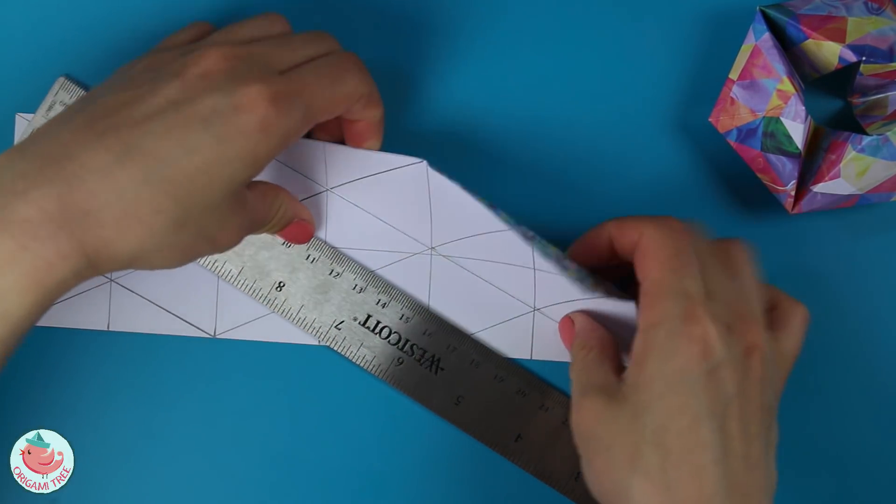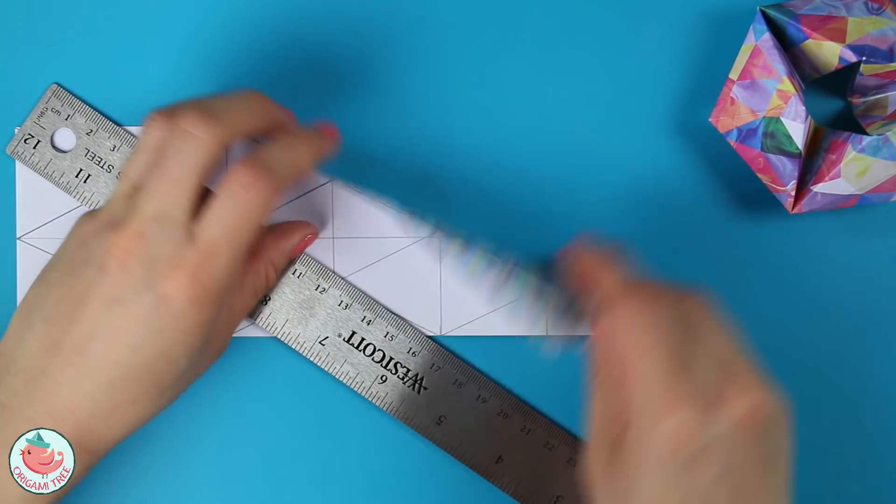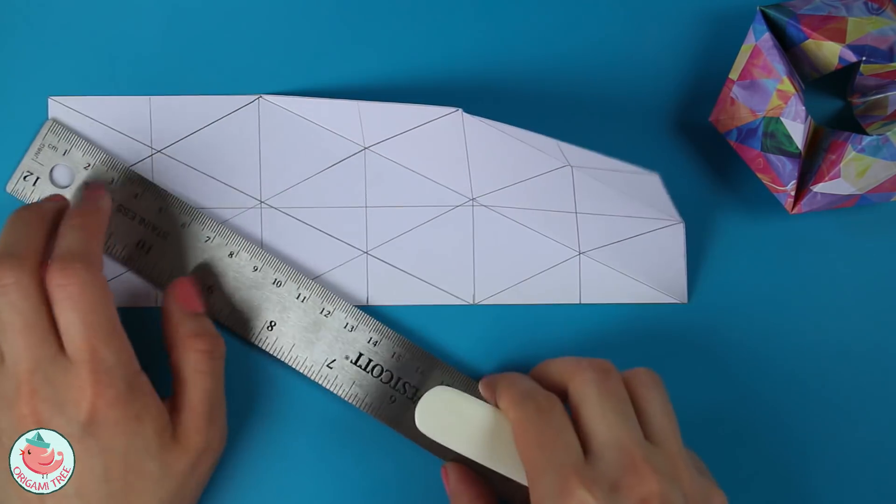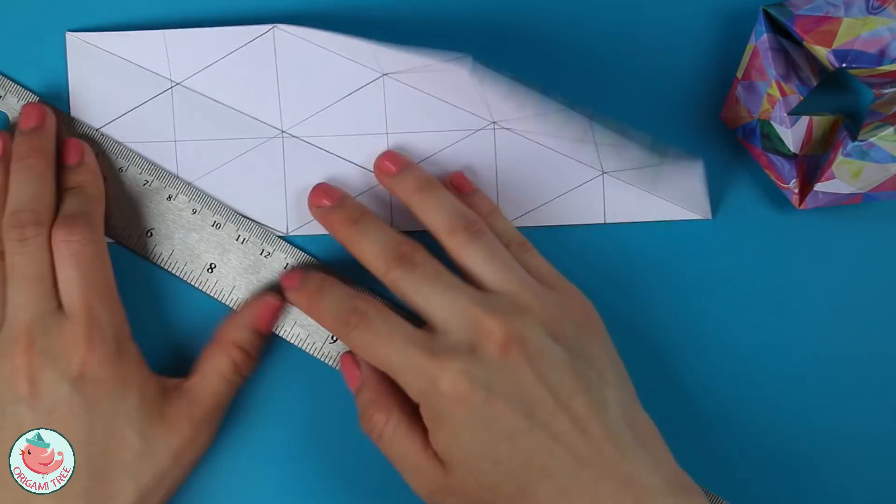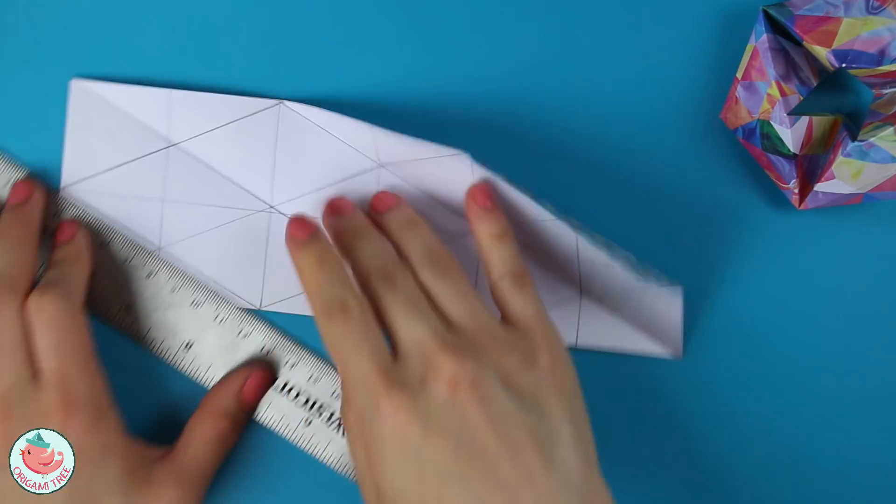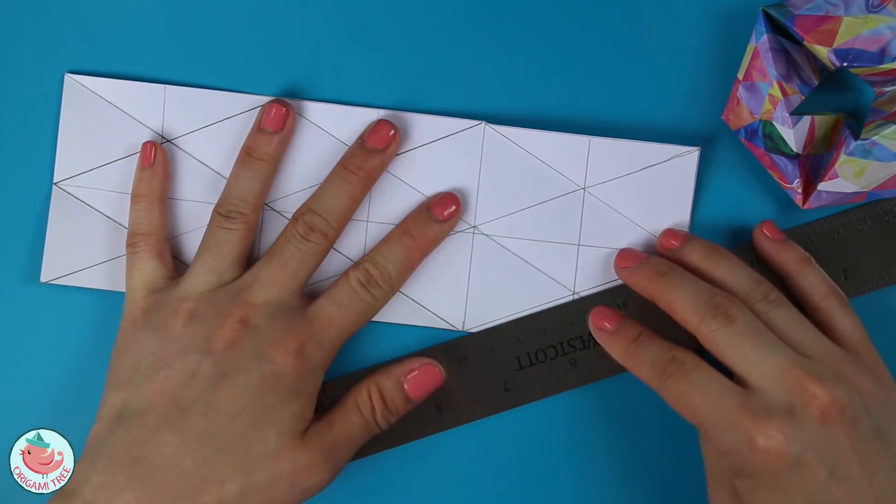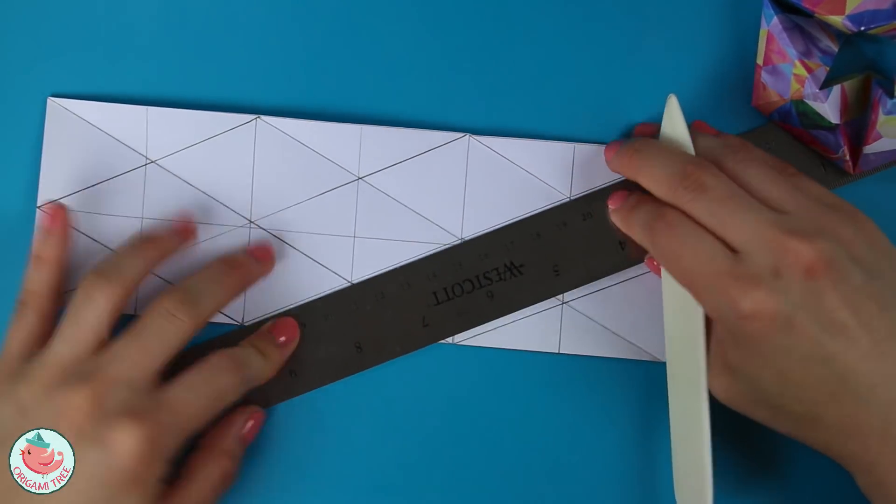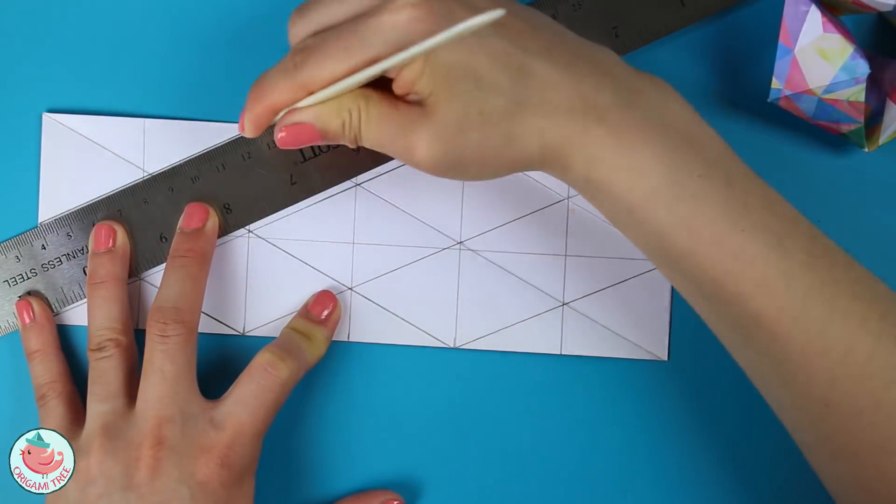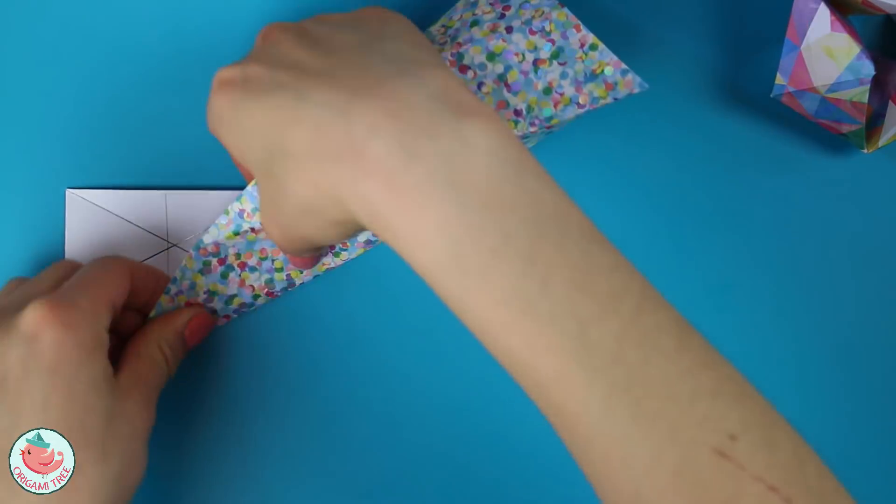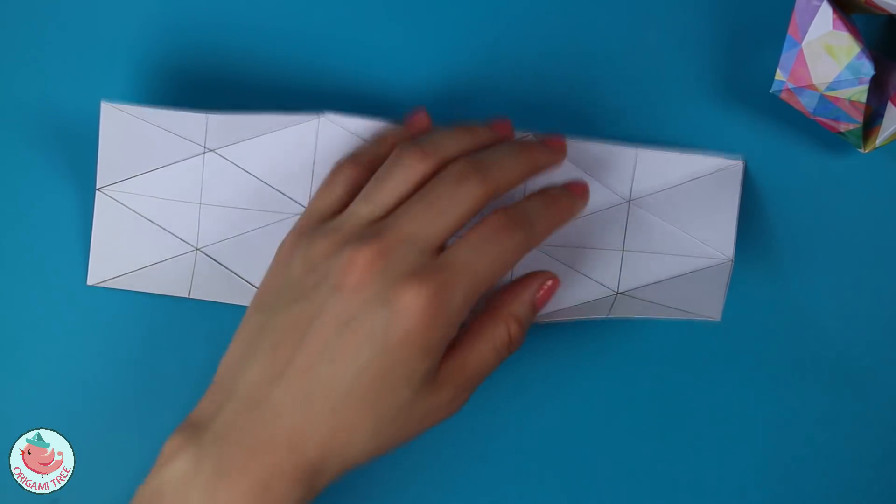So now you have that crease already kind of made and you know which direction you're going at. So you would basically just fold all of the diagonals first. So now we have all of the diagonal folds done and now let's work on the other ones.